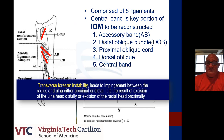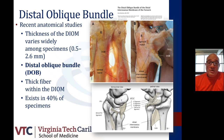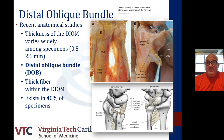Transverse forearm instability leads to impingement between the radius and the ulna, either proximally or distally — usually the result of excision of the ulna head distally or excision of the radial head proximally. Longitudinal forearm instability occurs when the radius migrates proximally, impacting the capitellum, resulting from radial head excision after fracture with disruption of the interosseous membrane and TFCC complex. Notably, the distal oblique bundle exists in only about 40% of specimens and varies between 0.5 to 2.6 millimeters in thickness. When present, it serves as a secondary stabilizer, especially for injuries involving the radial shaft and TFCC complex.